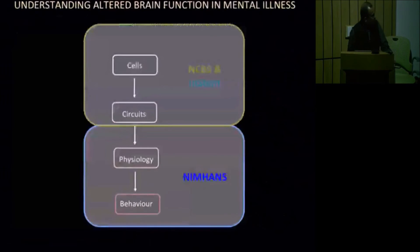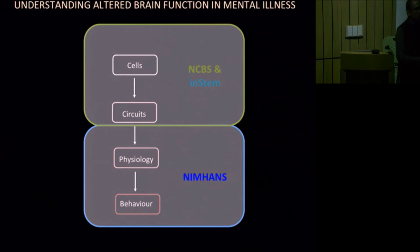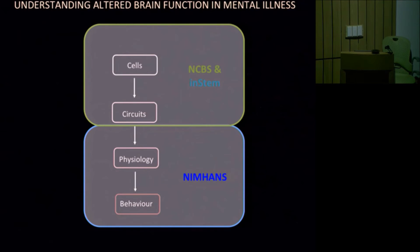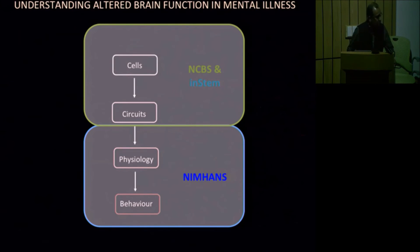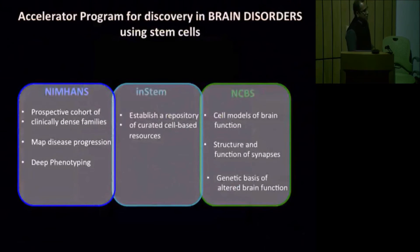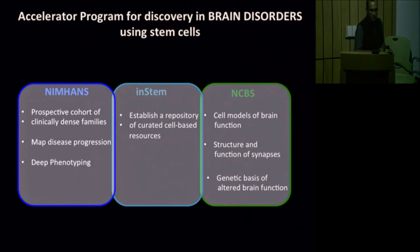To summarize, going back to the original diagram about dissecting brain function: in this continuum of connections that results in human behavior, we have a group of people who will analyze how the brain functions at the level of physiology and behavior, and a group of us on this campus who will interact closely with them to analyze how individual cells in the brain might be different and how they might connect to form circuits. This is the summary of the program across all three institutes involved: NIMHANS, INSTEM, and NCBS.